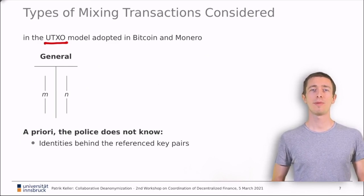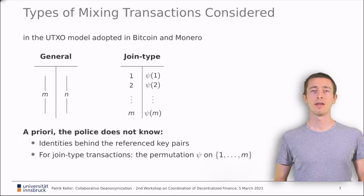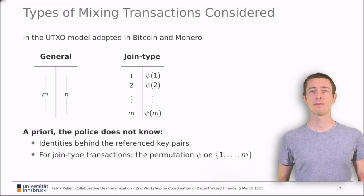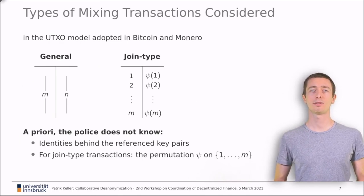For certain kinds of transactions, the police can infer money flow. For example, if there is only one output or if the values of inputs and outputs allow some kind of inference. There are tools that automatically apply these techniques where possible. However, certain transactions cannot be linked and exactly these transactions are used as mixes. We focus on two kinds of mixing transactions.